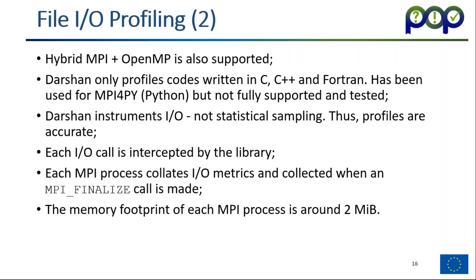Hybrid MPI and OpenMP is also supported. The I/O is usually done by the MPI process, so if you're doing I/O in an OpenMP region you have to be careful. Darshan only profiles C, C++, and Fortran — the traditional compiled languages. It has been used with MPI for Python but is not fully supported and tested. Darshan instruments I/O rather than doing statistical sampling, which means the profiles are accurate. It intercepts each I/O call.